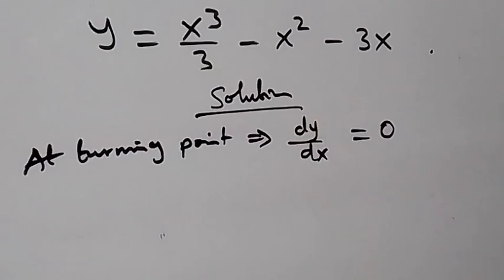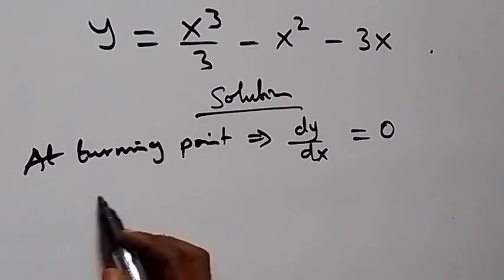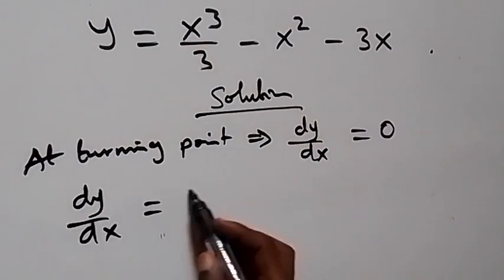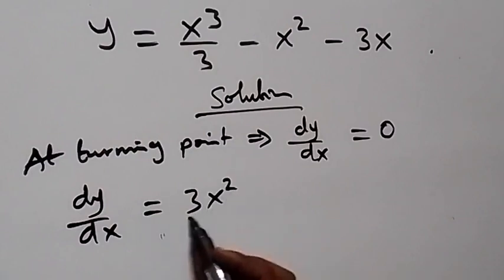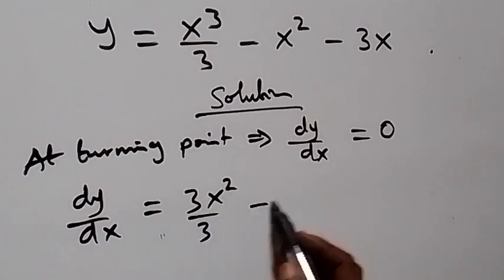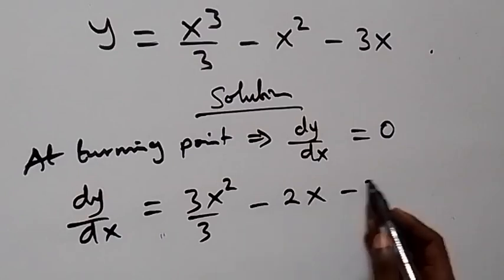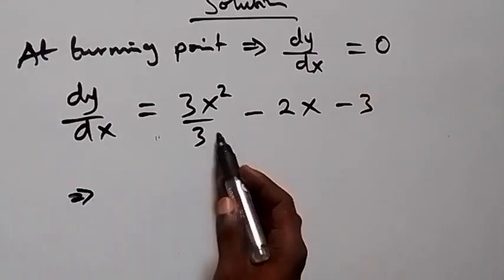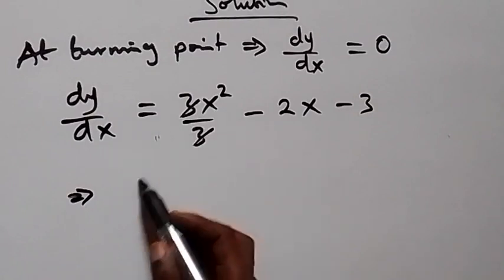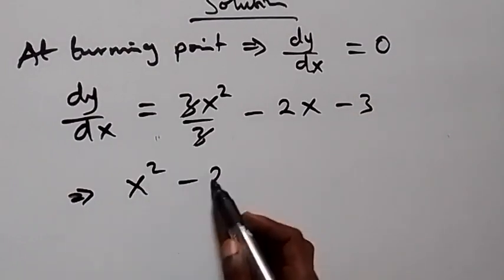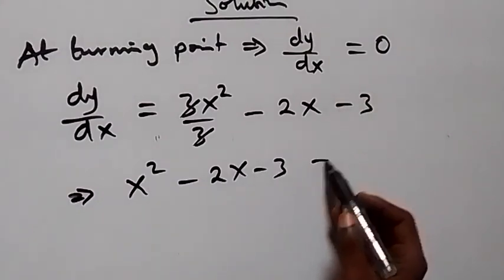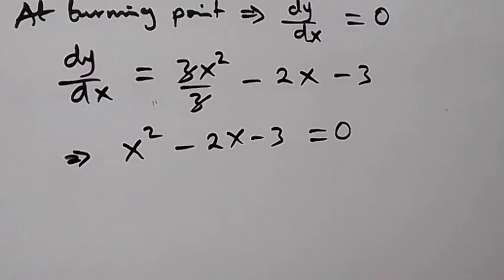So when we differentiate the given function, dy/dx is the same as 3x² over 3, then minus 2x minus 3. This simplifies further — the threes cancel — and we have x² minus 2x minus 3, which is equal to zero at the turning point. So we now have a quadratic equation to solve.